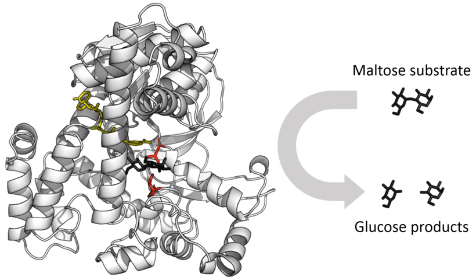A few decades later, when studying the fermentation of sugar to alcohol by yeast, Louis Pasteur concluded that this fermentation was caused by a vital force contained within the yeast cells called ferments, which were thought to function only within living organisms. He wrote that alcoholic fermentation is an act correlated with the life and organization of the yeast cells, not with the death or putrefaction of the cells. In 1877, German physiologist Wilhelm Kühne first used the term enzyme, which comes from Greek enzymon, meaning leavened or in yeast, to describe this process.